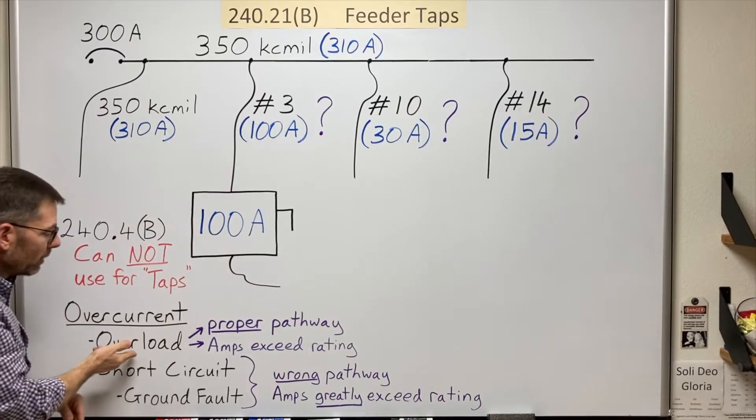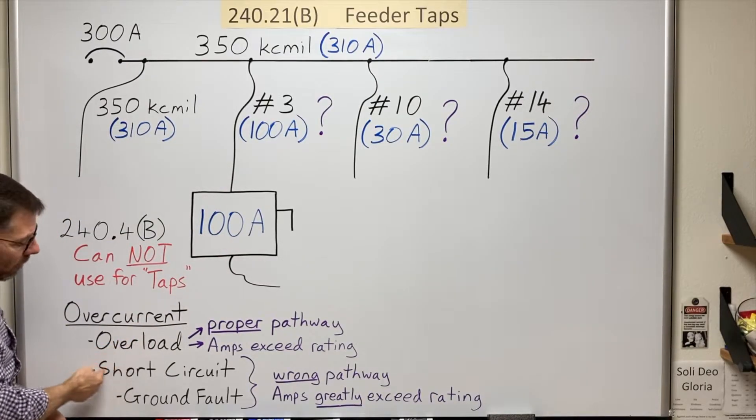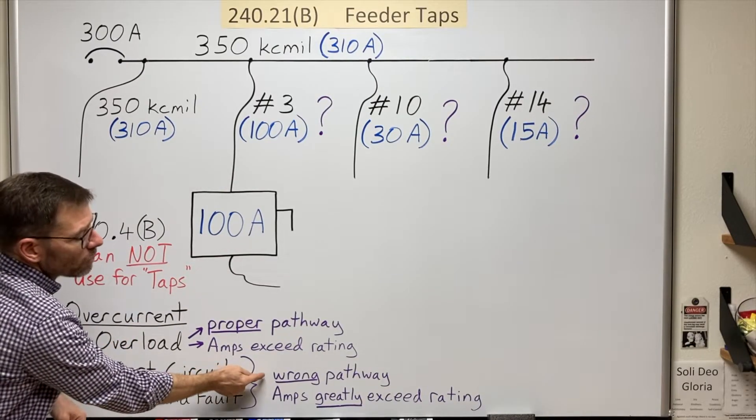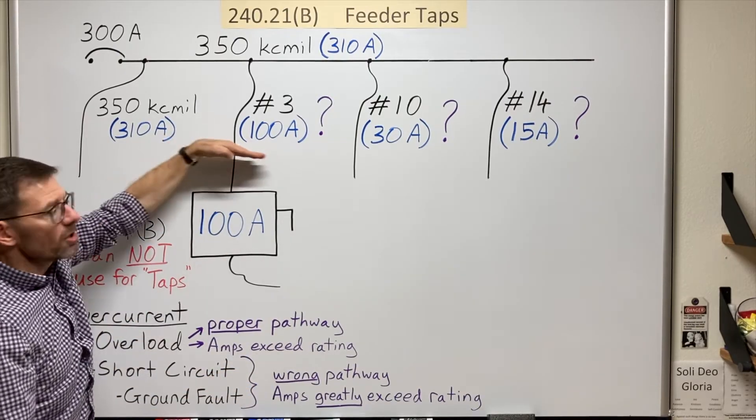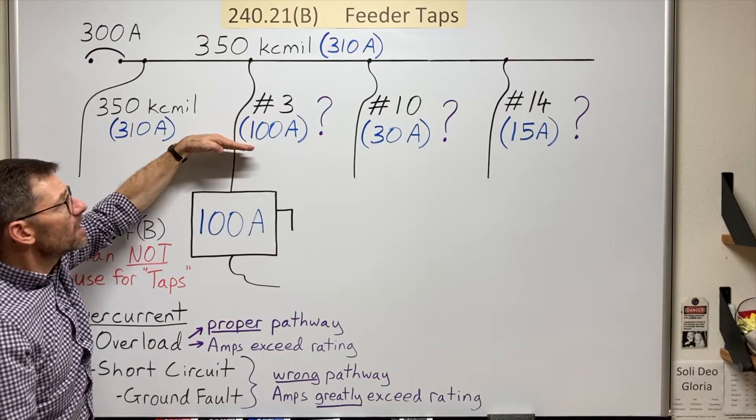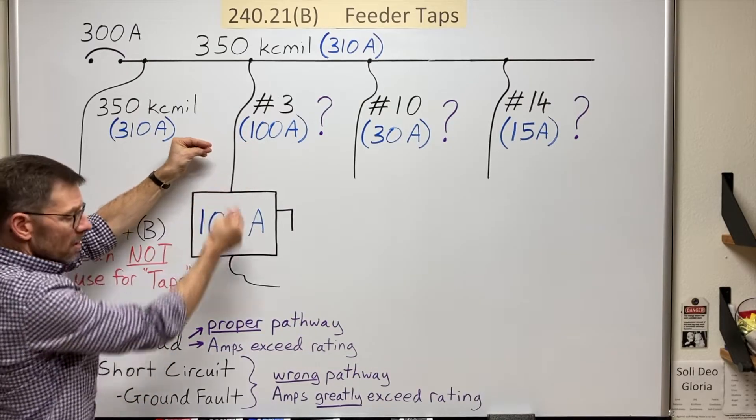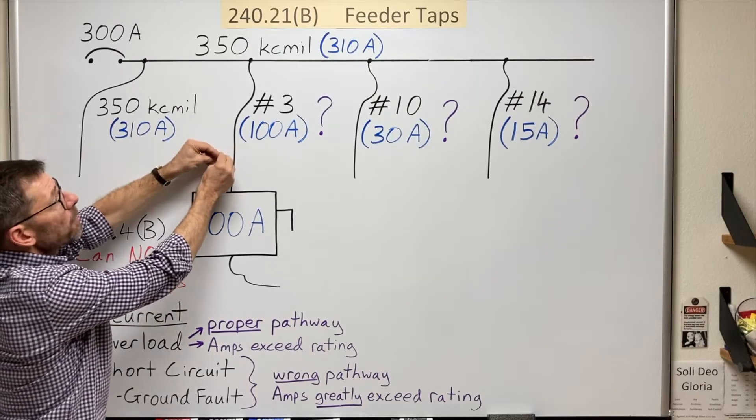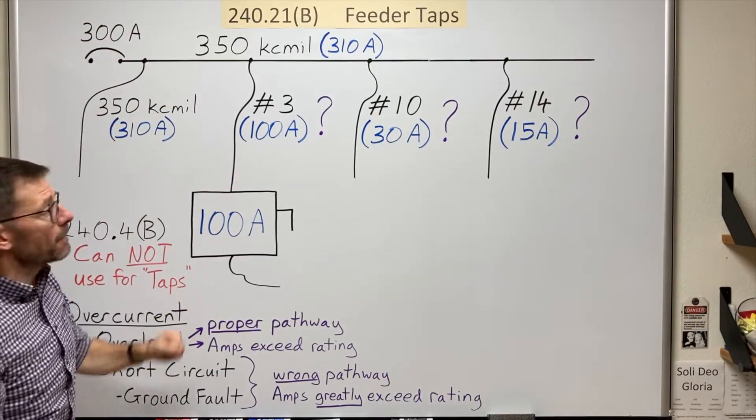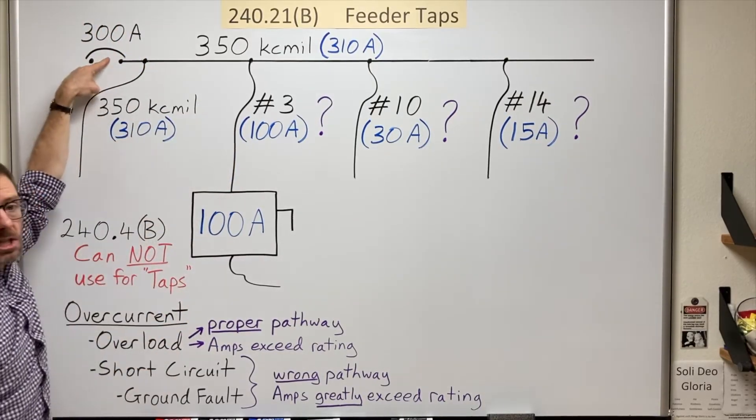So that would protect from overloads. But remember the short circuit? It's a wrong pathway. If we have some damage here, let's say someone saw through this conduit. Is that going to cause a lot of amps to flow? Yeah. That's going to cause probably thousands, many thousands of amps to flow. And will that trip this breaker?